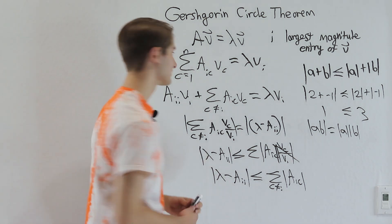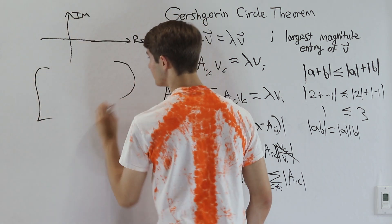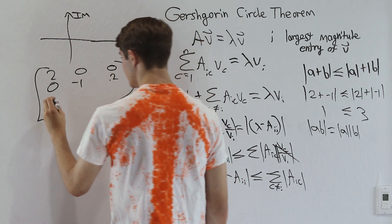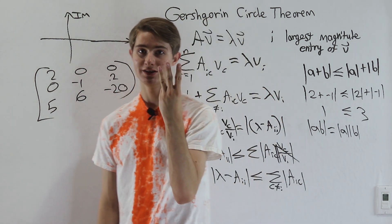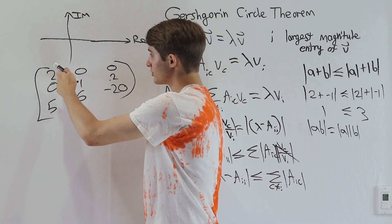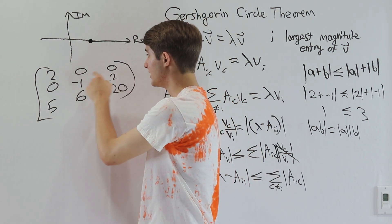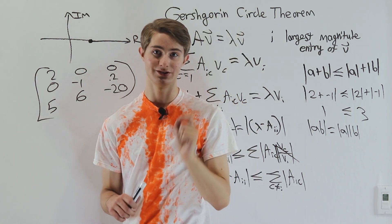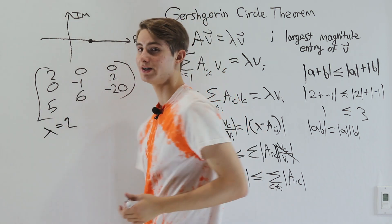Let's look at an example. On the complex plane with imaginary and real axes, consider the 3×3 matrix [2, 0, 0; 0, -1, 0.2; 5, 6, -20]. The Gershgorin Circle Theorem gives us three disks, each centered at a diagonal entry. The first disk is centered at 2, with radius equal to the sum of absolute values of the non-diagonal entries in row one — which is 0. So this is a disk of radius 0, meaning lambda equals 2 is an eigenvalue. That's lucky because non-diagonal entries were 0, which usually doesn't happen. The second row gives a disk centered at -1 with radius 0 + 0.2, a tiny circle of radius 0.2.